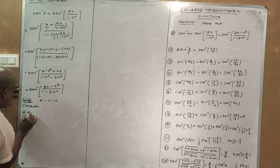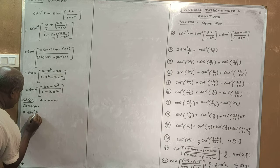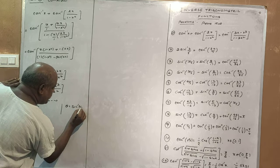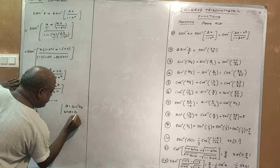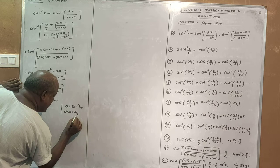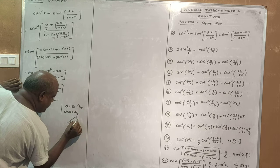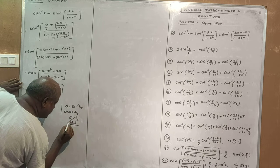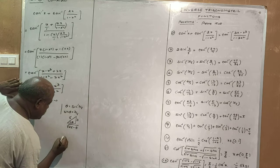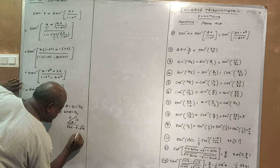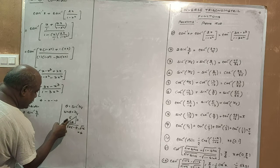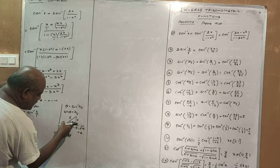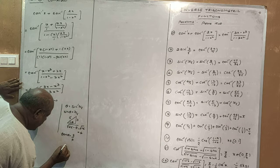Problem 2: evaluate 2 into sin inverse 3 by 5. Let theta equal sin inverse 3 by 5, so sin theta equals 3 by 5. Drawing a right triangle with opposite side 3 and hypotenuse 5, the adjacent side is 4 by the Pythagorean theorem. From the triangle, tan theta is opposite by adjacent.